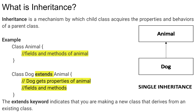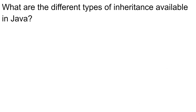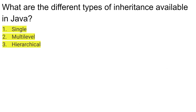Can you tell me the different types of inheritance available in Java? There are three types: the first one is single inheritance, the second one is multi-level inheritance, and the third one is hierarchical inheritance.